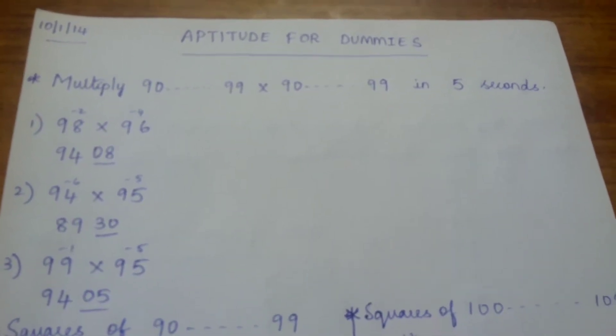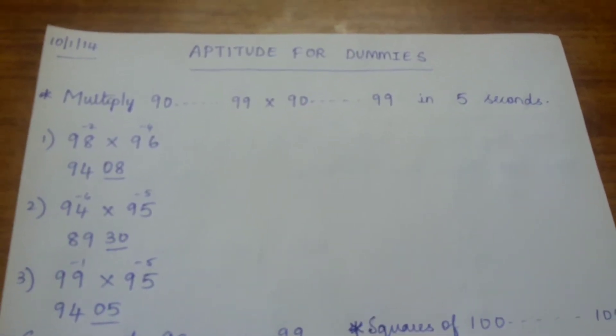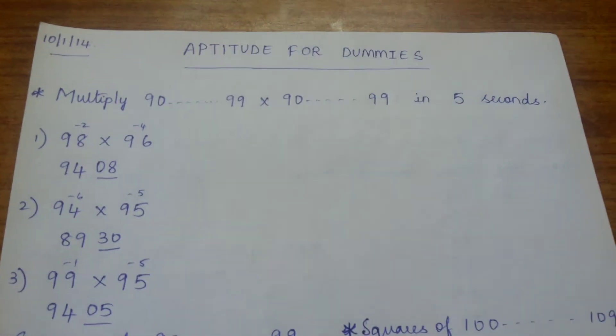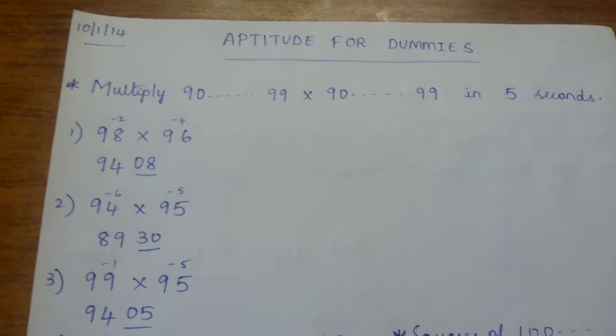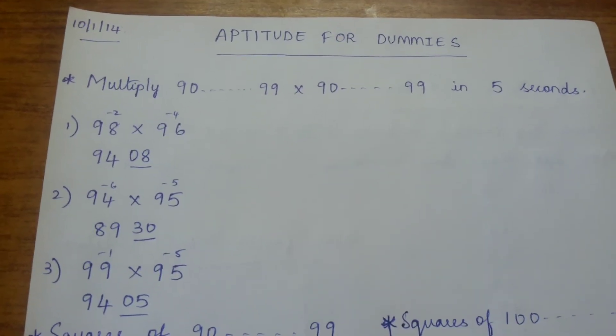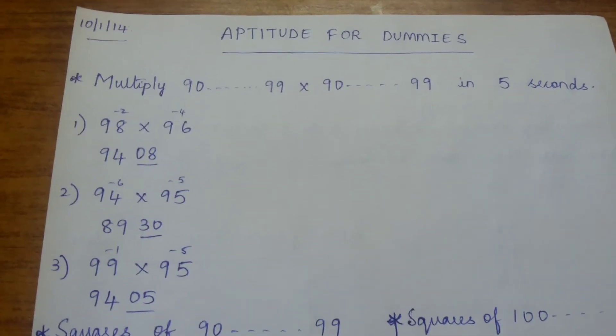Hi friends, welcome to aptitude for dummies. Today I'm going to teach you how to multiply 90 to 99 into 90 to 99 in 5 seconds. Coming to our first problem: 98 into 96.